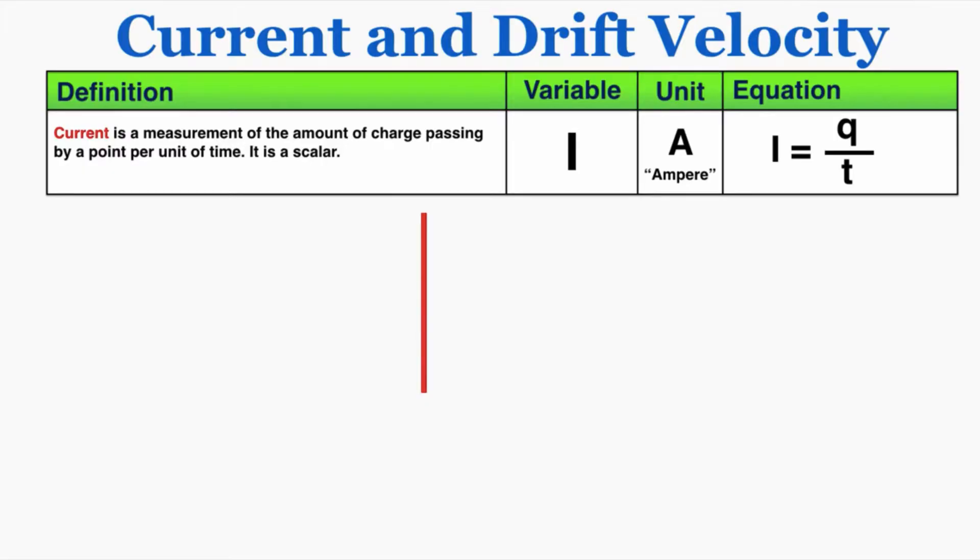As an example, if I draw this line and imagine that 10 coulombs of charge pass by the line in 2 seconds, the current there was 5 amps, 5 coulombs per second. So that's what an amp is, and that's what current is. It's pretty simple, just a measurement of how much charge is passing in a given amount of time.